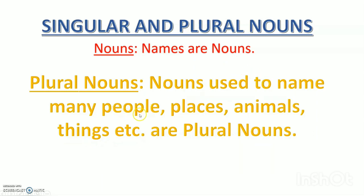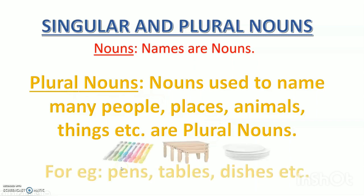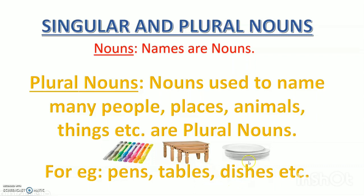Aise naam jinse humein pata chalta hai ke hum bahut logon ki baat kar rahe hain, bahut jagahon ki, kaafi saare animals ki, kaafi saari cheezon ki — aise namon ko hum plural nouns kehte hain. For example, when I say pens — can you see the S behind? I'm talking about many pens. Similarly, three tables makes it tables, and so many dishes makes it dishes. All these are examples of plural nouns.